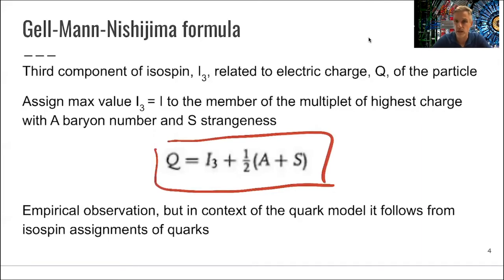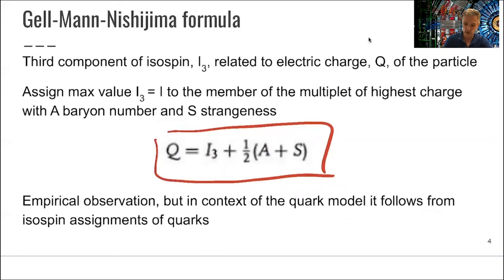which is that the charge, if you assign the maximum value I3, the third component of your isospin, to the member of the multiplet with the highest charge, which in the previous example was either the proton or the pi plus. Then the charge of this particle follows from the isospin, the baryon number, and the strangeness. We looked at baryon number and strangeness before. As a reminder, strangeness is the number of strange quarks in the baryon or the meson. And the baryon number is simply the number of baryons.